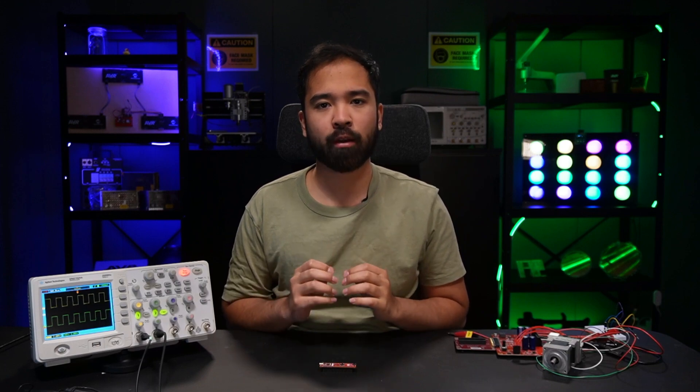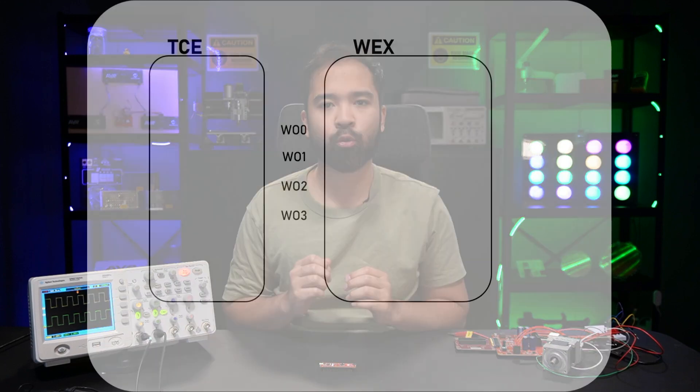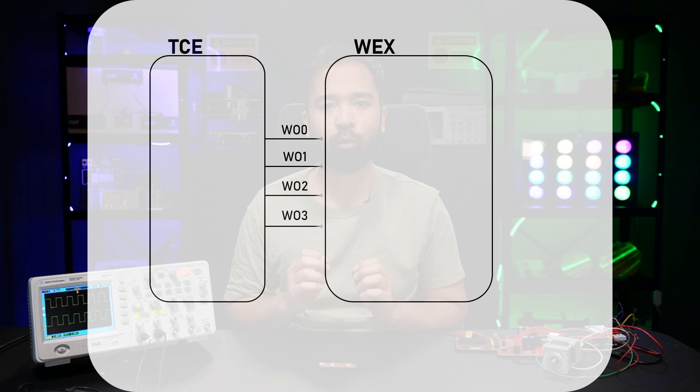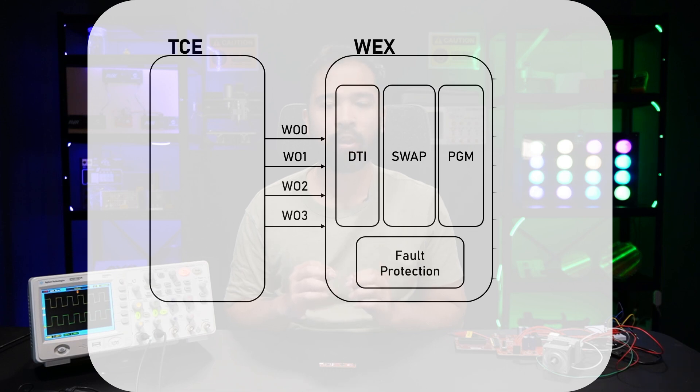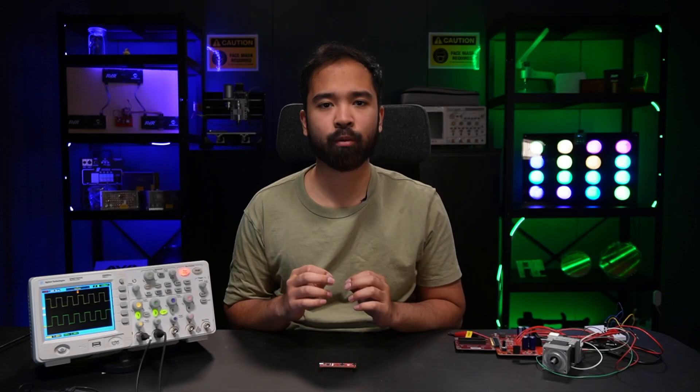The TCE waveform outputs are directly connected to the waveform extensions inputs, where the waveform extension can provide extra capabilities to the waveform outputs from the TCE. The waveform extension can produce an inverted signal of the original waveform, essentially doubling the amount of PWM signals you can produce from 4 to 8 using a single timer.